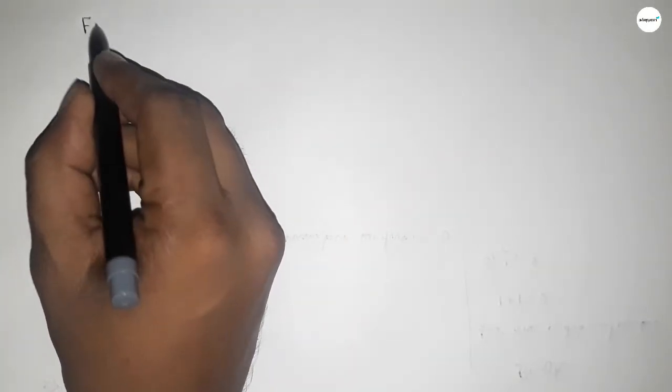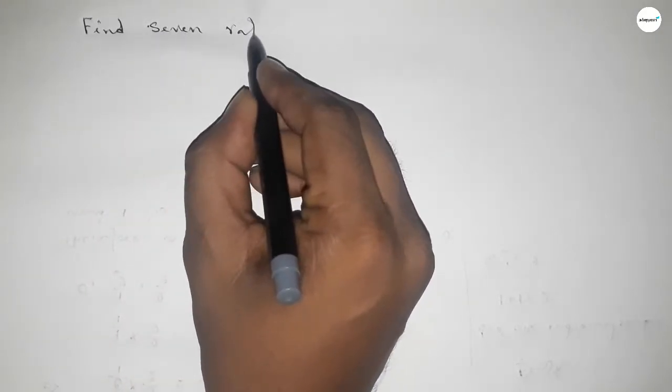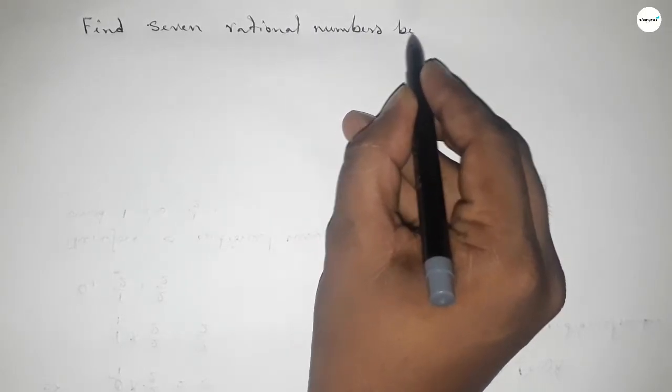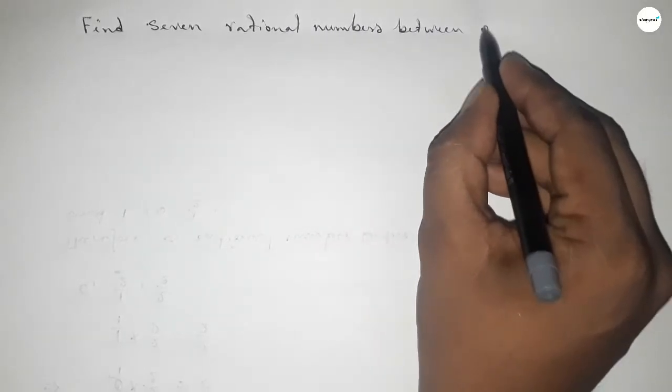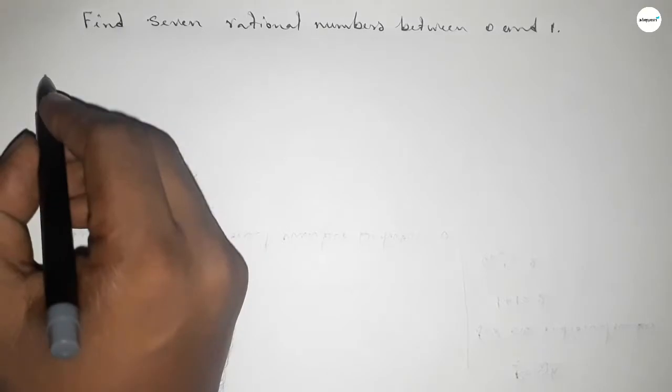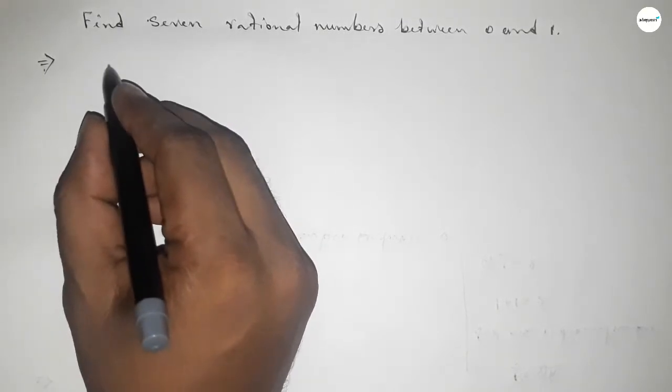Hi everyone, welcome to SSR Classes. Today in this video, we have to find seven rational numbers between 0 and 1. So let's start the video. First of all, write down here the given numbers 0 and 1.